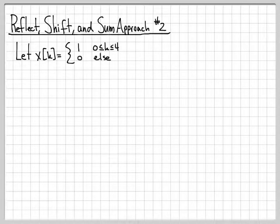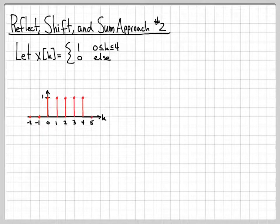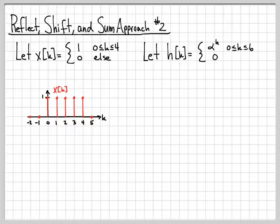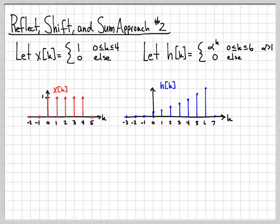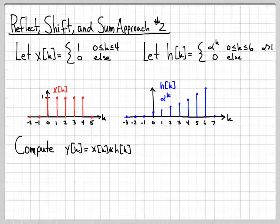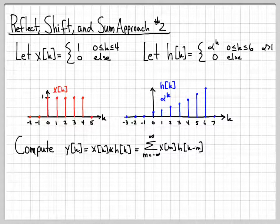The signals we're dealing with are x(k), where x(k) equals 1 for k between 0 and 4. So x(k) is 0 everywhere except at time samples k = 0, 1, 2, 3, and 4, where it equals 1. Then h(k) is alpha to the k for values of k between 0 and 6, for alpha greater than 1. Since alpha > 1, h(k) is an increasing exponential. We're asked to compute x(k) convolved with h(k), which by definition is the sum from minus infinity to infinity over m of x(m) h(k minus m).